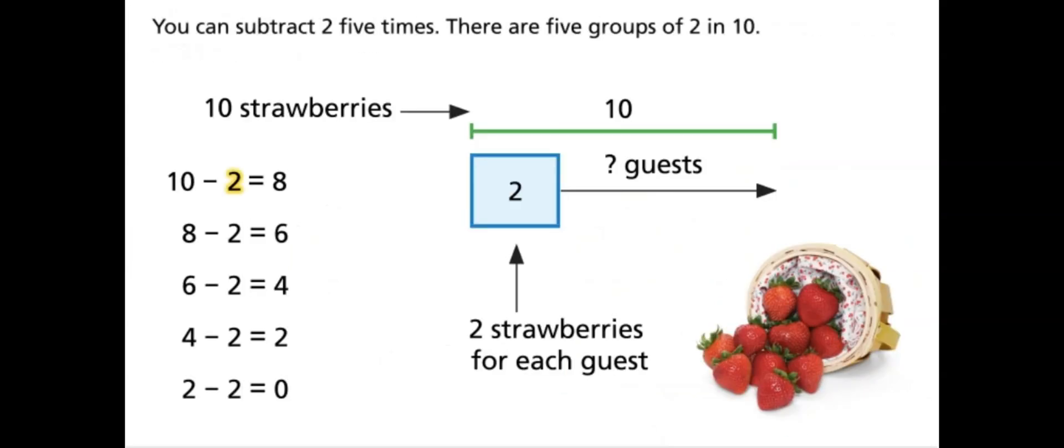You can subtract two five times. There are five groups of two in ten. There are no strawberries left. June can serve five guests.